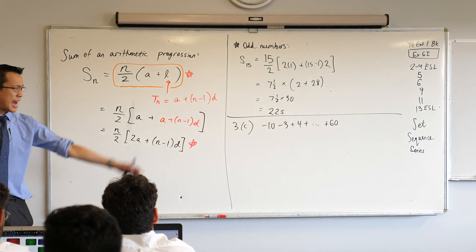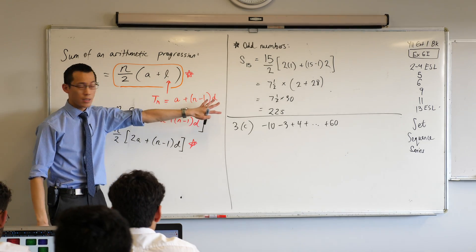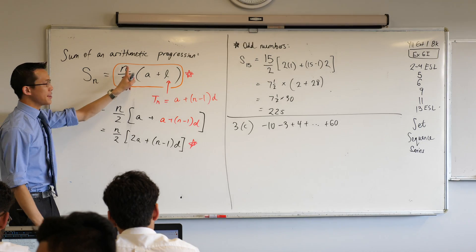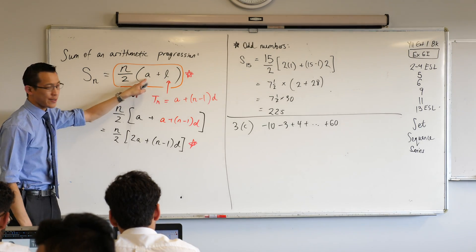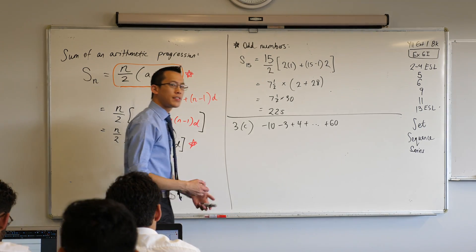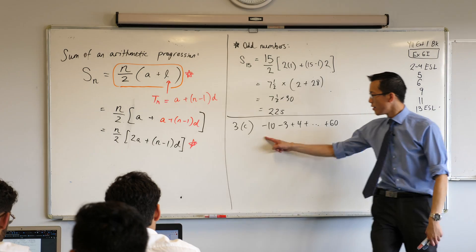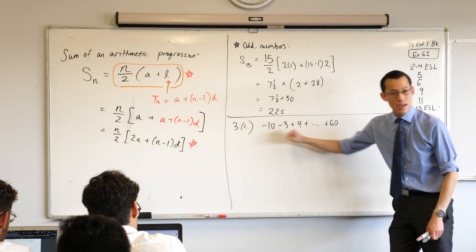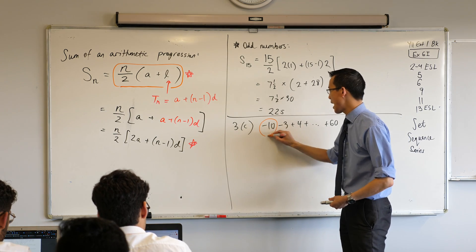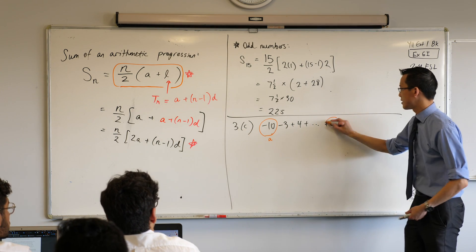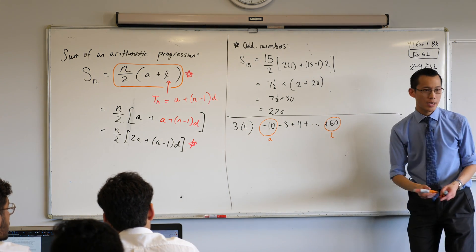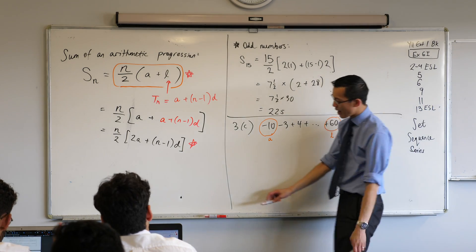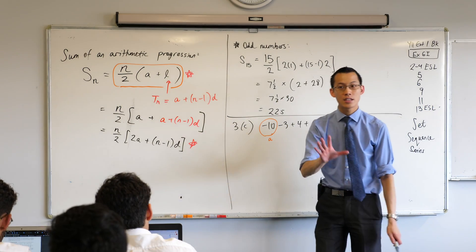Now, please note with me, have a look at the way we've written the series. This particular formula requires three pieces of information. It requires n, it requires a, it requires l. Which of these do we have just visible on the surface out of the three? I've got a and l. There's a, there's l. In fact, I'd love you to write that with me. Here's a and here's l. What I lack is n. How many terms are there? I don't know. So here's the way we're going to do it.